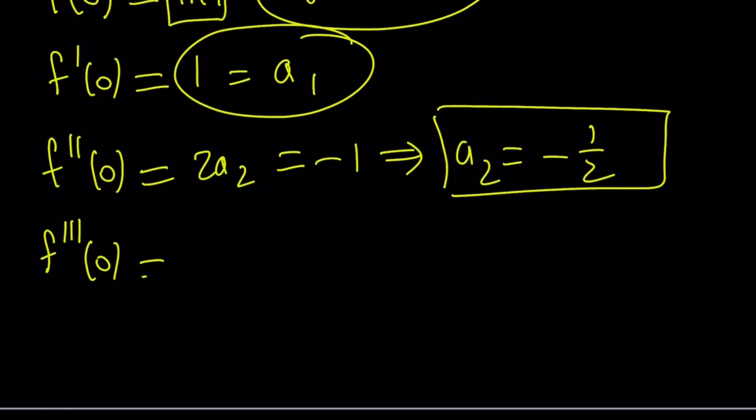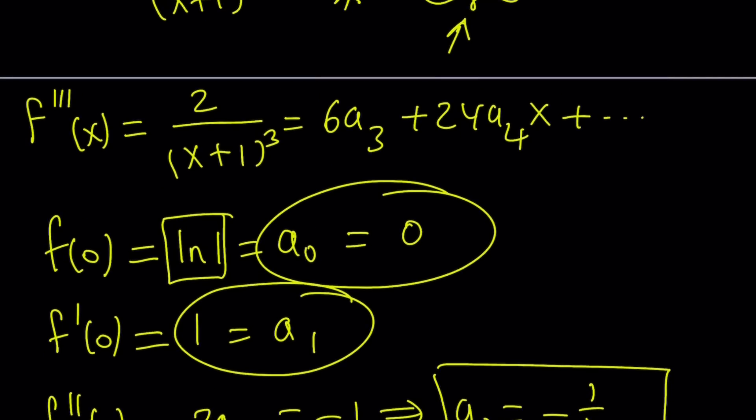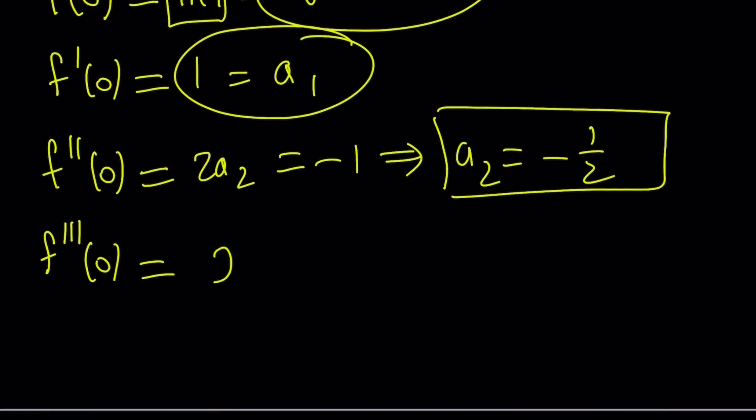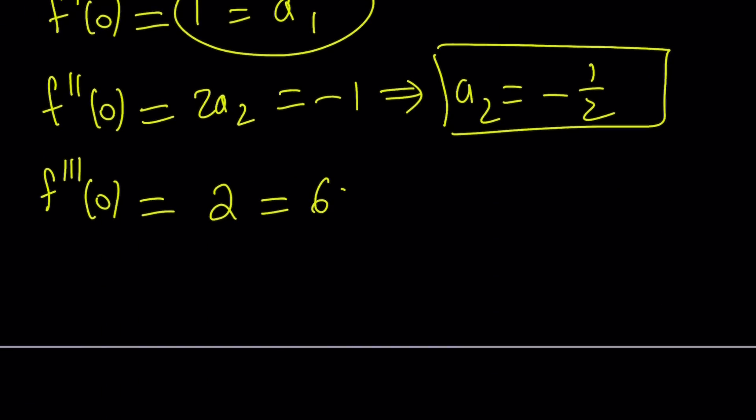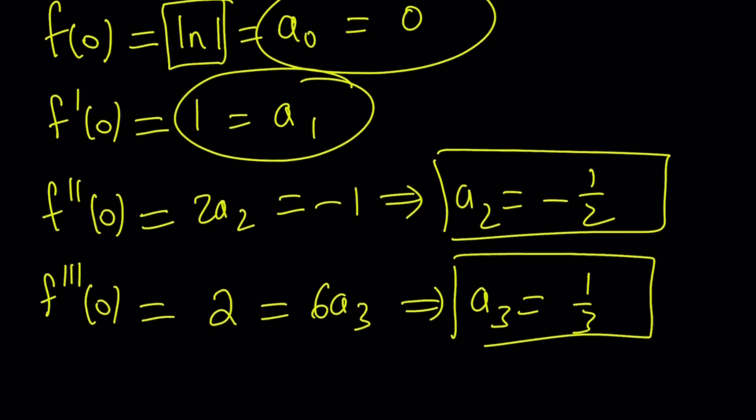You'll get a pattern really soon. Let's go ahead and do the third one and then hopefully you'll get to see the pattern. On the third derivative, if you replace x with 0, you're going to get 2 on the left-hand side. And on the right-hand side, in the infinite polynomial, this is going to be the answer because x will be 0 everywhere. So 6a₃. And from here, a₃ is going to be 1 third.